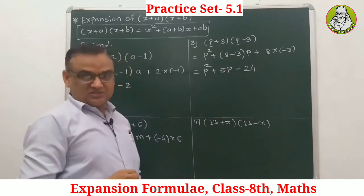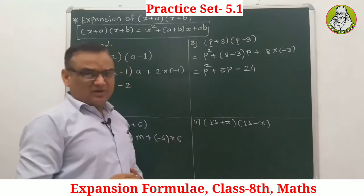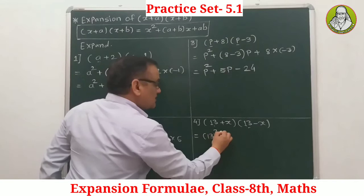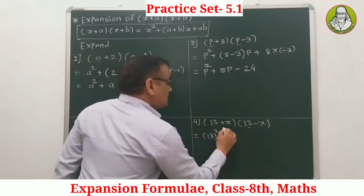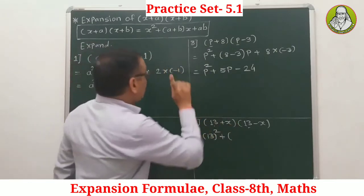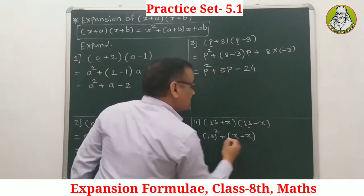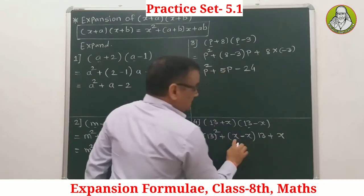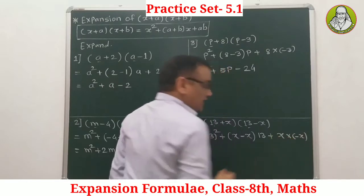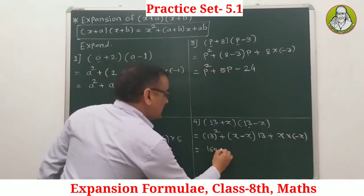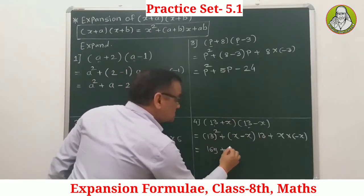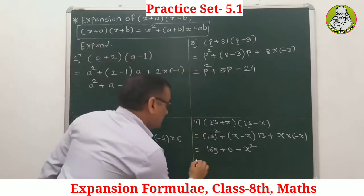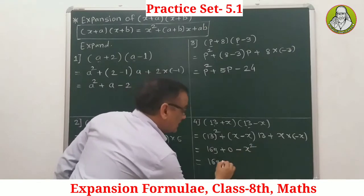Example 4: (30 + x)(30 - x). Equal terms are '30', so 30 squared = 900. Unequal terms are +x and -x. Addition: x + (-x) = 0, so 0 times 30 = 0. Multiplication: positive into negative = negative, x × x = x². Answer: 169... that is 900 - x².